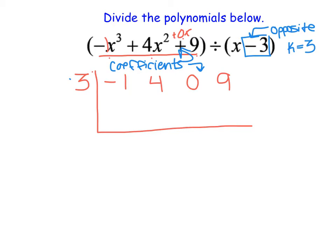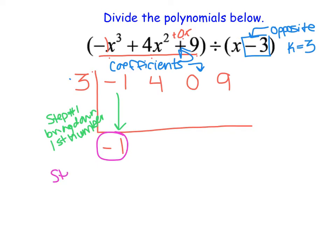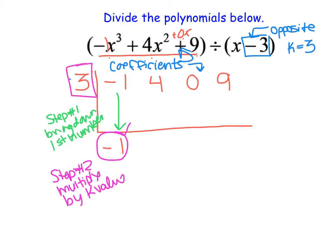For synthetic division, we do the exact same thing every time. First, we bring down the first number — so we bring down the negative 1. Then in step 2, we multiply this value by our k value, which is 3. So negative 1 times 3 becomes negative 3. Then in step 3, we add straight down: 4 plus negative 3 becomes 1.